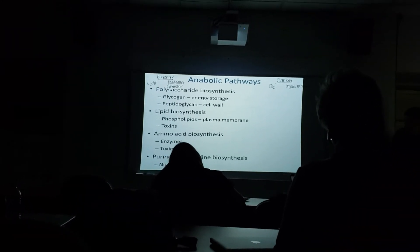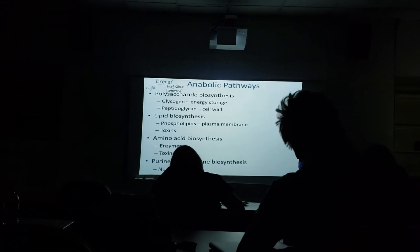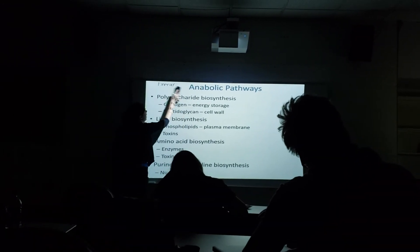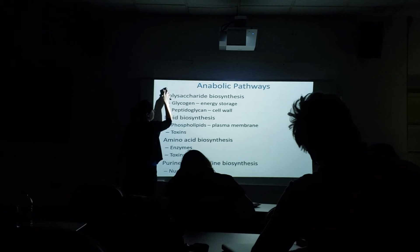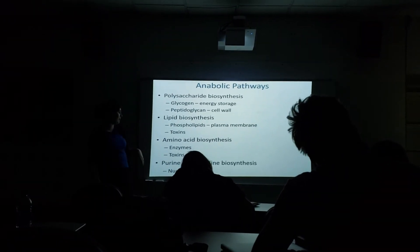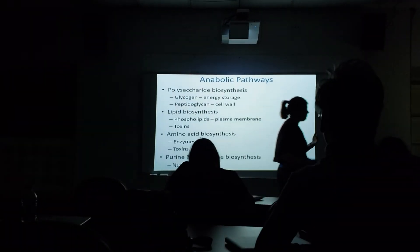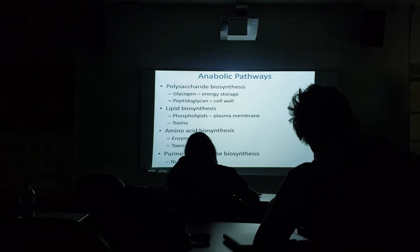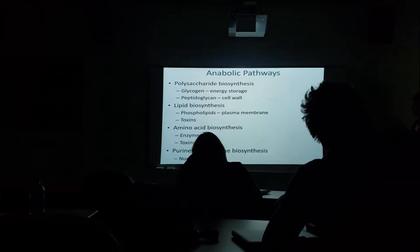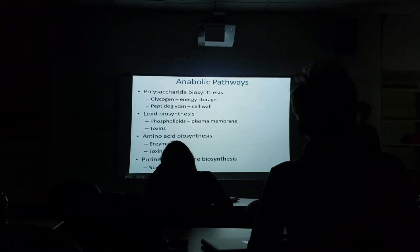A bacterium has to build polysaccharides — like glycogen for energy storage. It needs to build a new cell wall. It's going to need lipids and phospholipids for the plasma membrane. Bacteria make toxins — not trying to be jerks and poison you, that's just what they do. They make enzymes and they make DNA and RNA, purines and pyrimidines.